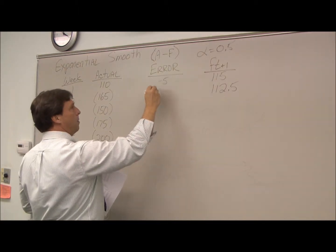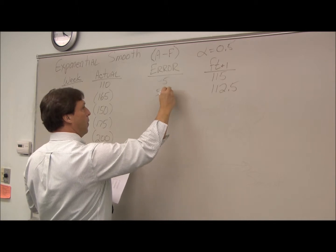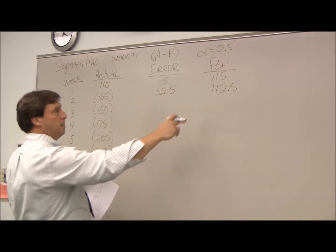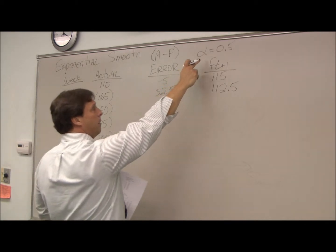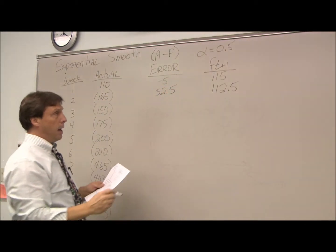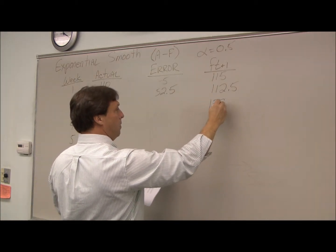I just follow the same thing: I know my current forecast, I know my error, I have my alpha, I stick it right in the formula and calculate it out, and it will come out to 138.8.